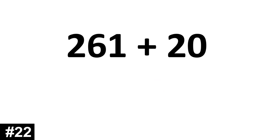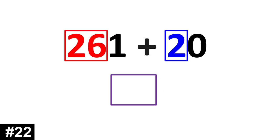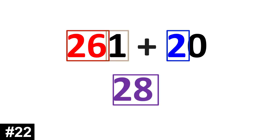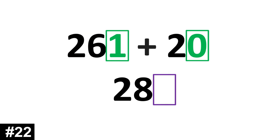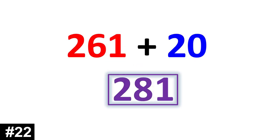261 plus 20. 261 has 26 tens. We add that to 2 tens. And we have 28 tens. We look to the ones. 1 and 0 gives us 1. 281.